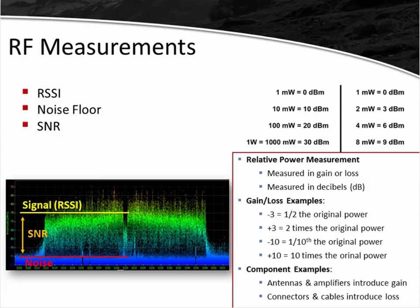The noise floor is the signal strength of RF noise in the frequency space you're using within your environment — usually somewhere between -93 and -103 or -104 dBm. The difference between the received signal strength and the noise floor is what we call SNR, represented in decibels (dB). For example, if the noise floor is -95 dBm and the signal strength is -70 dBm, then your SNR is 25 dB — not dBm. SNR is a relative value because it's the difference between two absolute values.